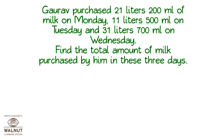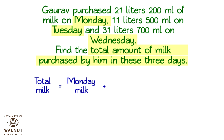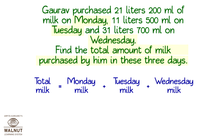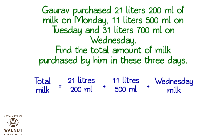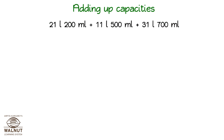Gaurav purchased 21 liters 200 milliliters of milk on Monday, 11 liters 500 milliliters on Tuesday, and 31 liters 700 milliliters on Wednesday. Find the total amount of milk purchased by him in these three days. What do we have to find? The total amount of milk purchased. Total milk equals milk purchased on Monday plus Tuesday plus Wednesday. We know each day's amount. When we add them up we get the total milk purchased. This is adding up capacities.